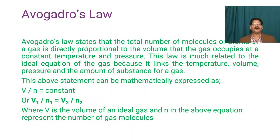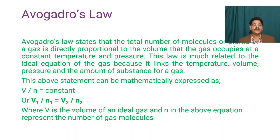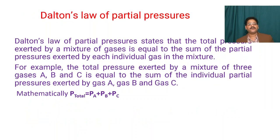Next is Avogadro's Law, or Avogadro's Hypothesis. According to this law, the total number of molecules or atoms of a gas is directly proportional to the volume that the gas occupies at constant temperature and pressure. This law is closely related to the ideal gas equation because it links temperature, volume, pressure, and amount of substance. Mathematically, V/n = constant, or V₁/n₁ = V₂/n₂, where V is the volume of an ideal gas and n represents the number of gas molecules.